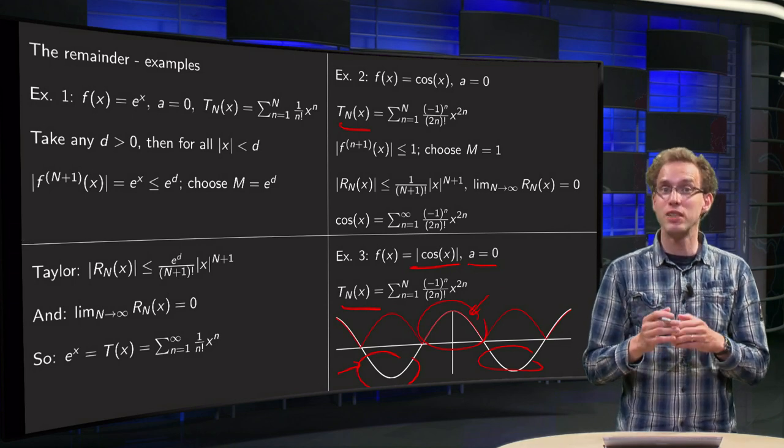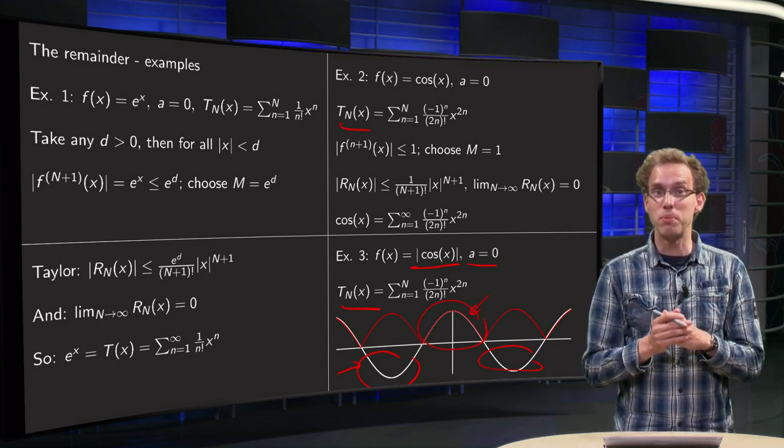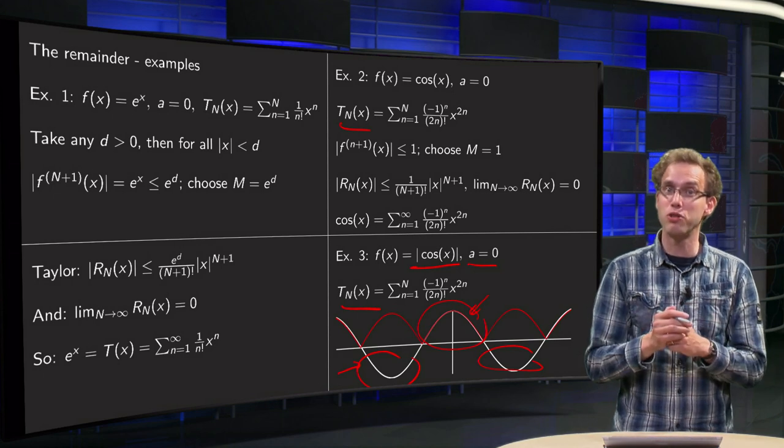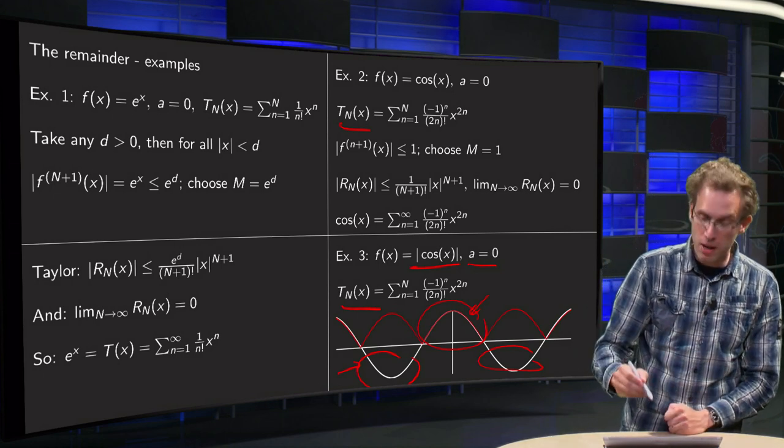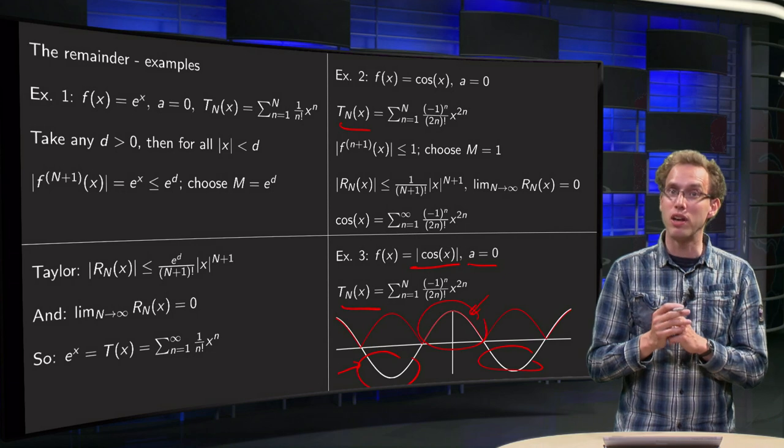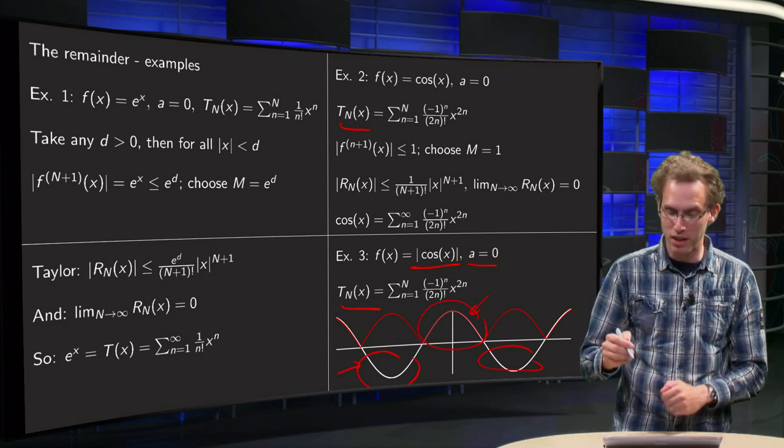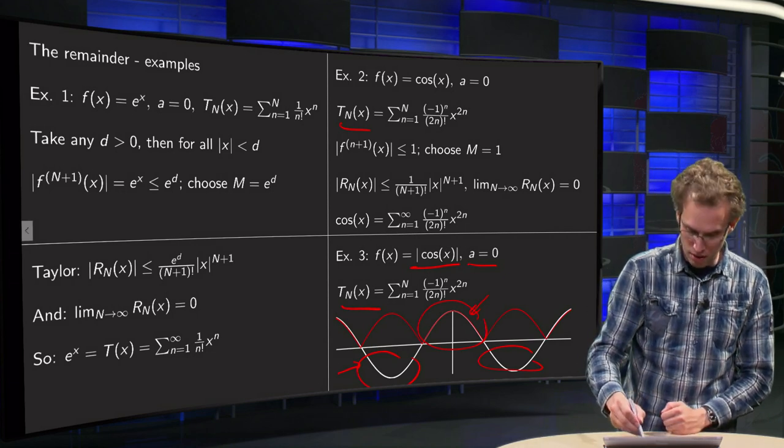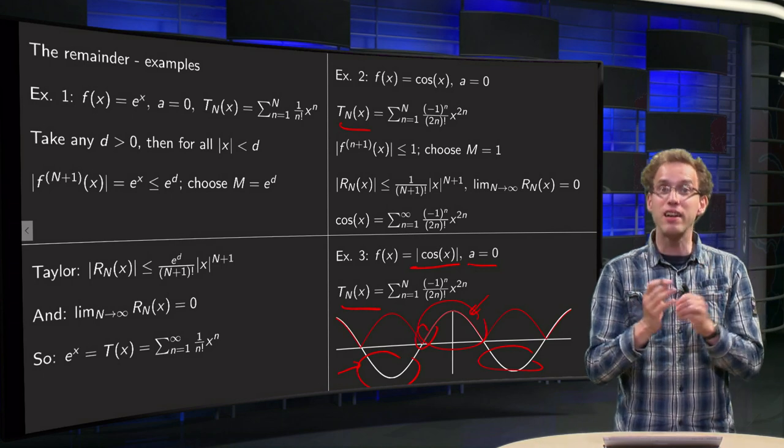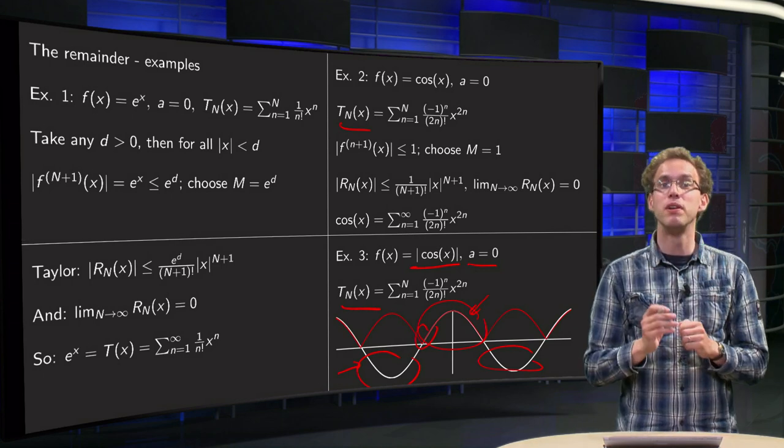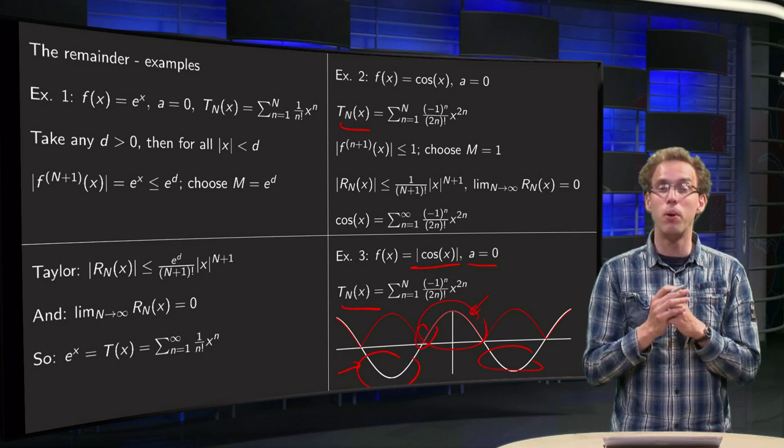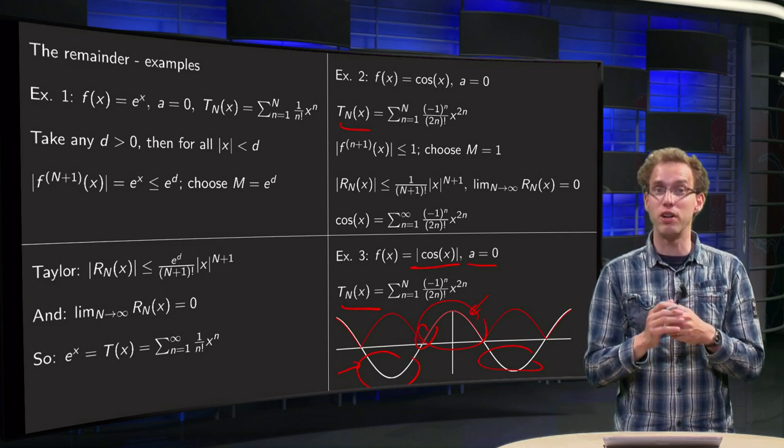So, why is that? Well, in this case you cannot estimate your R_N, you cannot get your R_N to 0, and you see also why, because in order to get your R_N to 0 you need to be able to estimate derivatives. As you see over here for example, the derivative blows up, you get a cusp, so you can't estimate your R_N, so you do not know whether your remainder goes to 0.